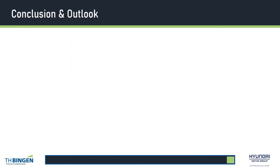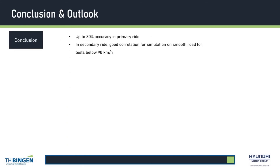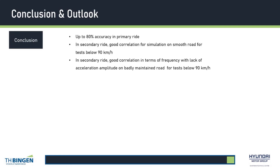In conclusion, in primary ride, the simulation gives results with an accuracy of at least 80%. In secondary ride, the accuracy was not quantified. Except for the test at 90 km/h, the simulation correlates well with the measurement on smooth road. On badly maintained road, the simulation portrayed the correct behavior, but with a lack of acceleration amplitude.